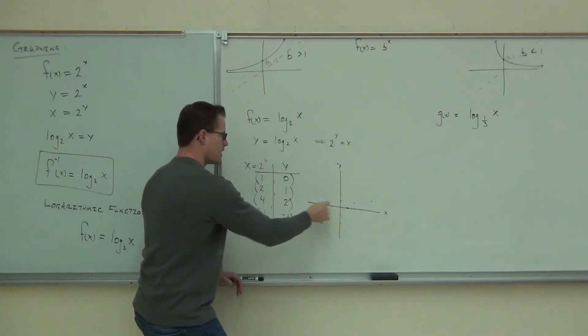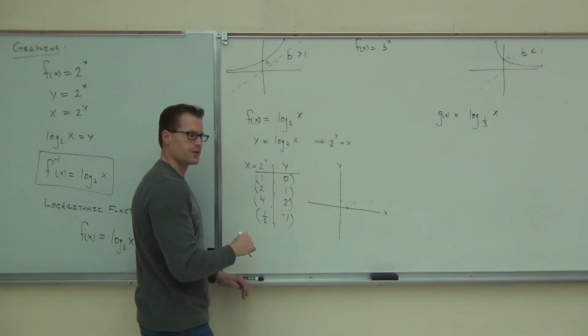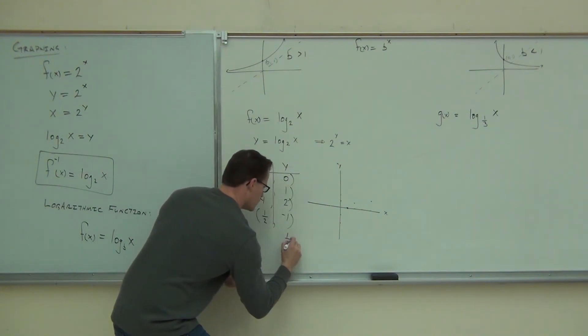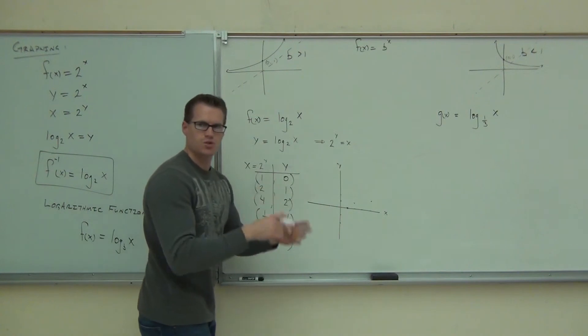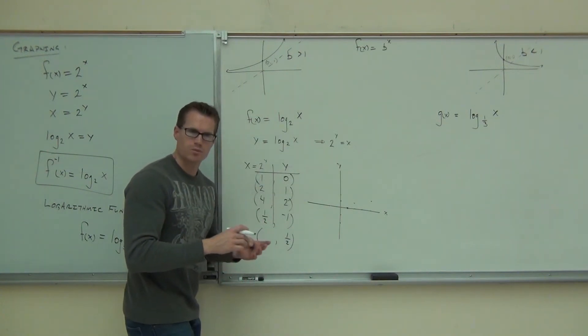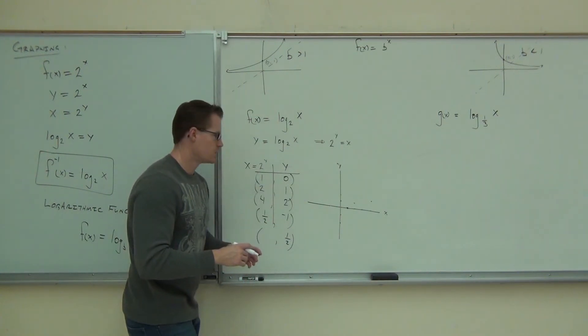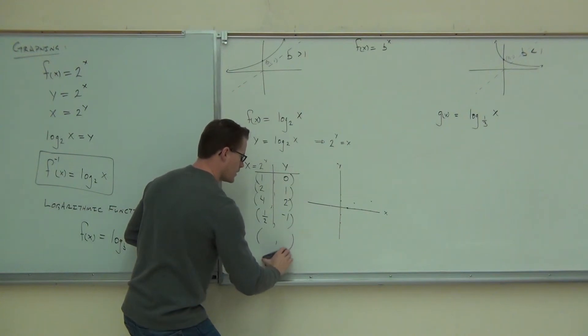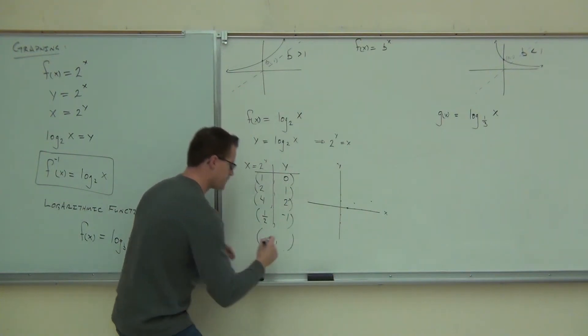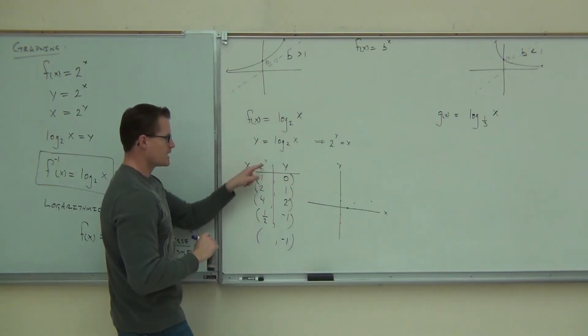This side of the graph, if I plug in 1 half, if I plug in 1 half over here. Try one more. 2 to the 1 half is the square root of 2. That's 1.41.